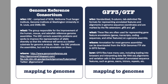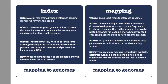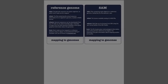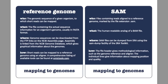GFF and GTF files are standard nine-column tab-delimited formats for representing annotated features and alignments in genome sequence coordinates, marked by those file extensions. Indexes are a set of files created when a reference genome is prepared for mapping. And mapping, as we discussed before, is the aligning of short reads to reference genomes. SAM files are the human-readable analogs of BAM files — these are FASTQ files mapped to reference genomes and represented in a standard file format, which we will discuss at length later in the course.